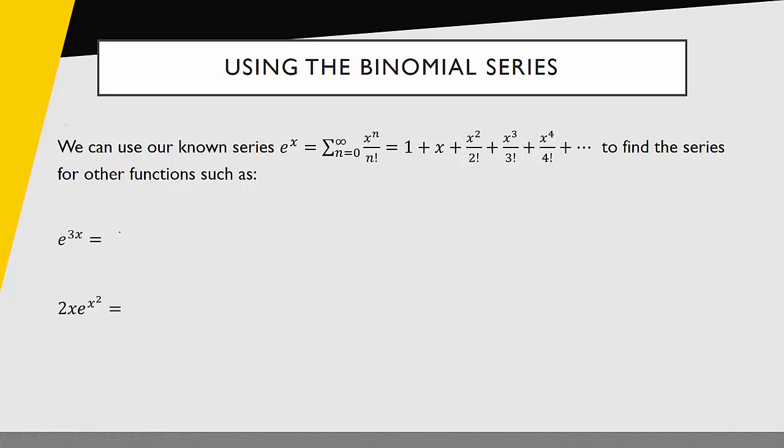The Taylor series for e to the 3x is going to be 1 plus 3x plus 3x quantity squared over 2 factorial. Don't forget to square both the three and the x. If you write this as 3x squared, that is incorrect. The next term would be the quantity 3x cubed over 3 factorial plus the quantity 3x to the fourth over 4 factorial. In fact, we can even write that in summation notation using that same substitution idea. This is just 3x to the n over n factorial.